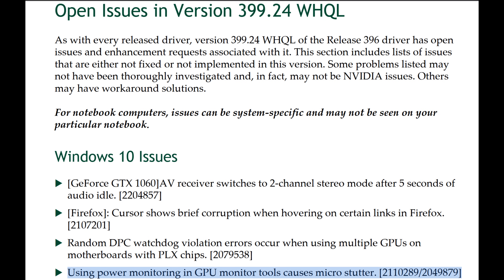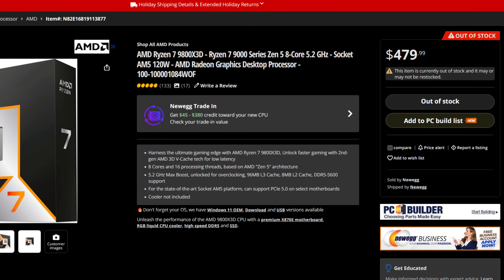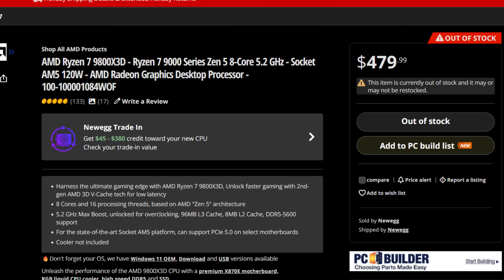In those Nvidia driver release notes there's a section on Windows 10 issues, and one of the points states: 'Using power monitoring in GPU monitor tools causes micro stutter.' The user reported that turning off GPU power monitoring completely got rid of their stutter. At first I thought this probably wasn't my issue because I'd been using GPU power monitoring from Afterburner on my Intel test bench without any problems, and this was from 6 years ago — surely it was fixed by now. But at this stage I was slinging whatever at the wall, and I was starting to fear there was something actually faulty with my hardware, like I'd have to RMA the 9800X3D. So as a sanity check I decided to investigate.